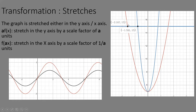A stretch in the x-axis is represented by f(ax), where a is inside the parenthesis. However, the scale factor is 1 over a. For example, f(2x) compresses the graph horizontally by a scale factor of 1/2 — corresponding x values are halved. The y values and x-intercepts remain the same; only the x positions change.